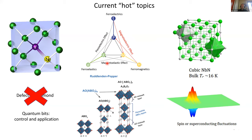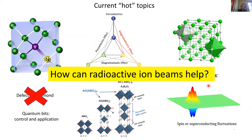A recent accepted proposal is looking at the quantum information regime, trying to adapt a well-known superconductor — niobium nitride, which has a quite low temperature TC but has some potential applications for quantum information as well. You can see there's quite a wide range of materials being considered at ISOLDE, in addition to quite a wide scientific programme in general.